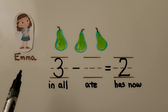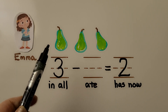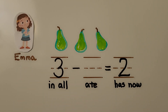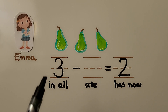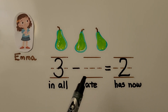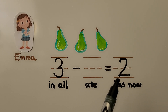Here's Emma. Emma has a set of three pears. She ate some, but we don't know how many. Now she has two left. How many pears did Emma eat? There are three in the set in all, and now she has two left.